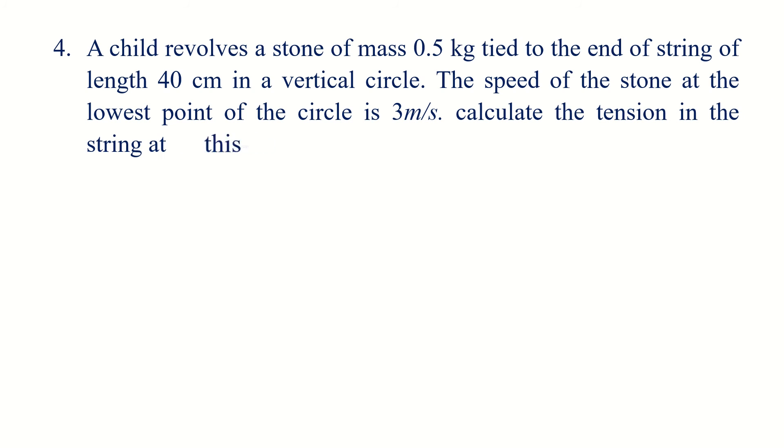Calculate the tension in the string at this point. For vertical rotation, the mass is 0.5 kg and radius is 40 cm. The velocity at the lowest point is given as 3 meters per second.